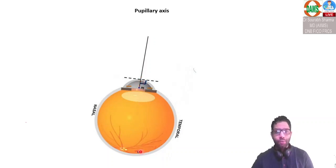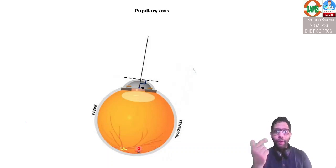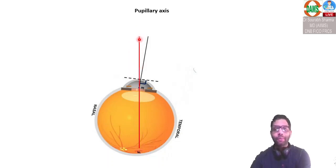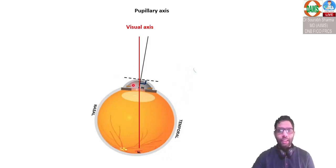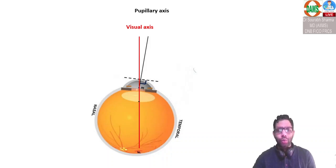This is the optic disc, and this is the fovea. Fovea is always on the temporal side. If you want to see any object in the visual pathway, the light has to go to the retina, and the most important point in the retina is the fovea. So the line joining the object to the fovea is the visual axis. This visual axis passes through a point known as the nodal point of the eye, which is just at the posterior border of the lens — it is a theoretical point.